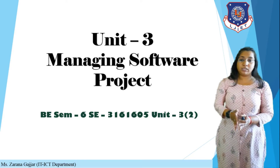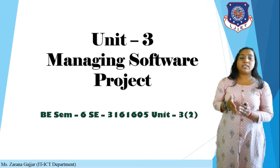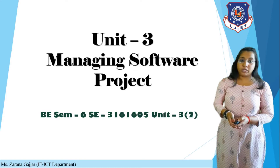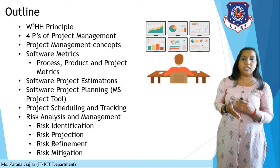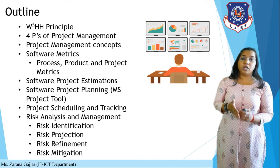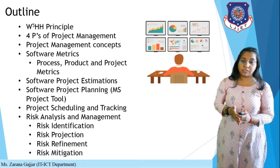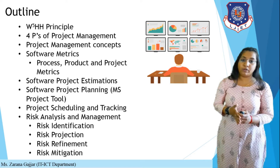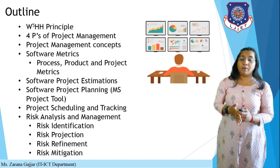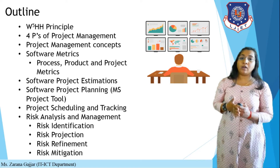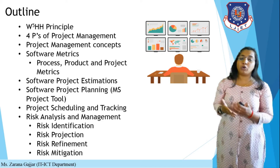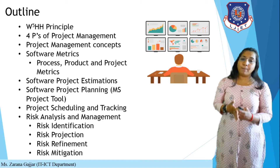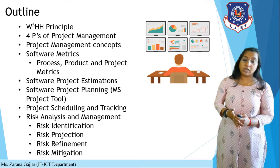In the previous lecture, we discussed about Managing Software Projects and the outline of topics to be covered in this unit. We completed the W5HH Principle by Barry Boehm — an American Software Engineer — covering how, when, where, what, who, and so on. We also covered the 4 P's of project management: people, process, product, and project.